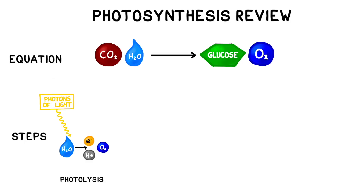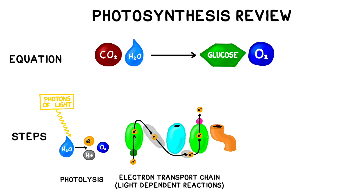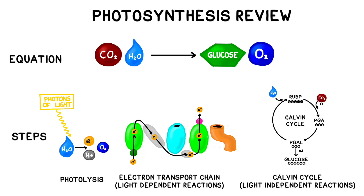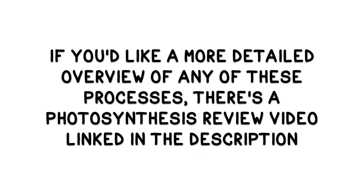Photosynthesis consists of three major phases—photolysis, the light-dependent reactions, and the light-independent reactions, aka the Calvin cycle. If you'd like a more detailed review of any of these processes, there's a photosynthesis review video linked in the video description.